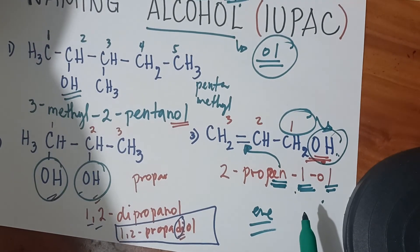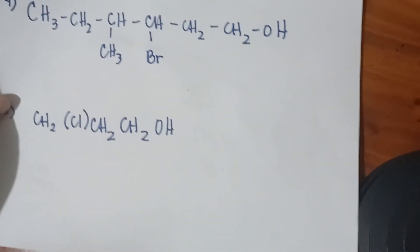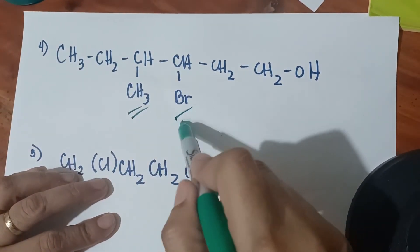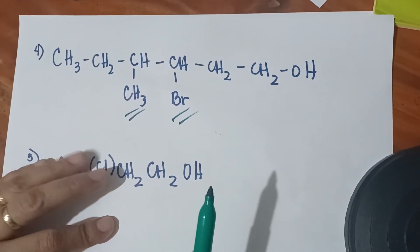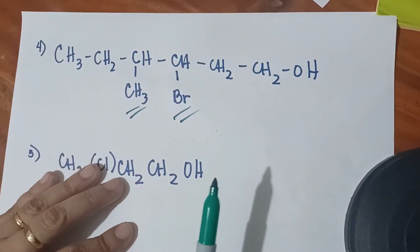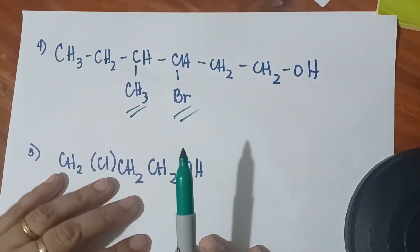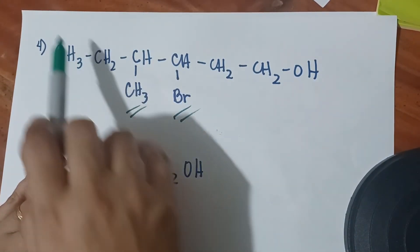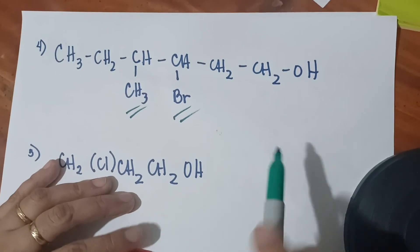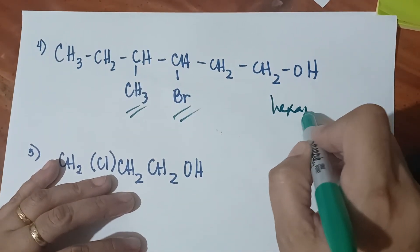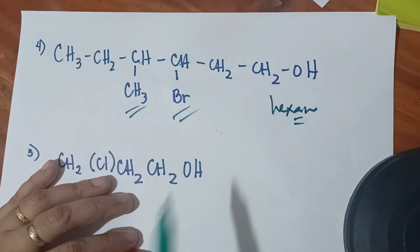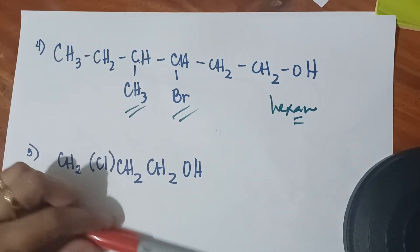Next, what if we have different substituents — for example, CH3 and Br? For this one, we again start from the longest chain. Counting the longest chain: one, two, three, four, five, six — it's six either way. So the parent chain is 'hexa' because there are six carbons. Now let us locate where the OH is. The OH is located here, so we start counting from that end.